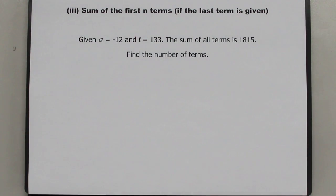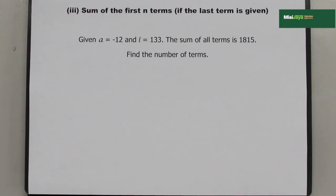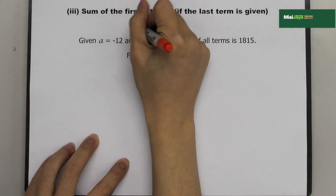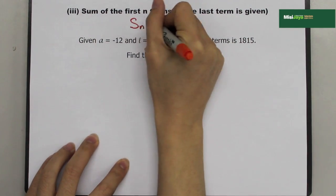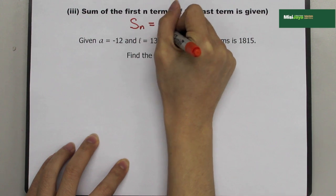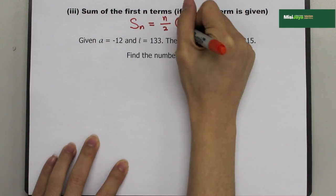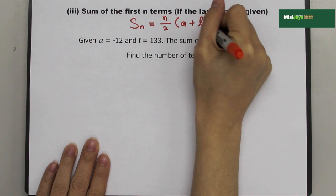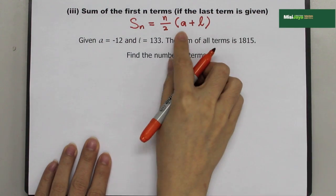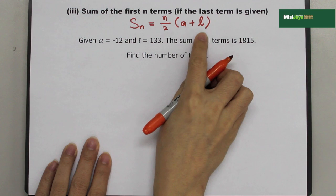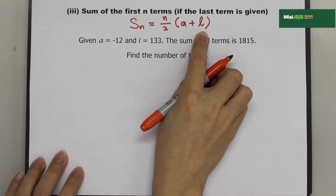The third formula that we have to remember for AP is the sum of the first N terms when the last term is given. The formula is SN equals N over 2, bracket A plus L. A is the first term and L is the last term.